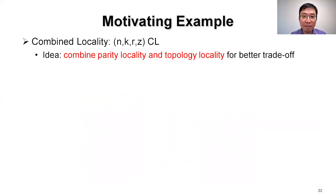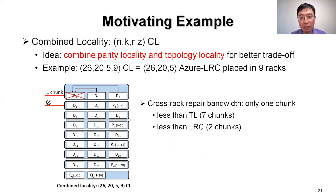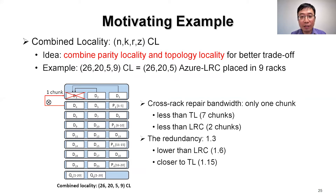That motivates us to combine both parity locality and topology locality for a better trade-off. We call it combined locality. For example, we can first use Azure LRC and then put the encoded chunks placed in nine racks. In this way, the cross-rack repair bandwidth is only one chunk — less than TL and LRC — and the redundancy is 1.3, which is lower than LRC and closer to TL.